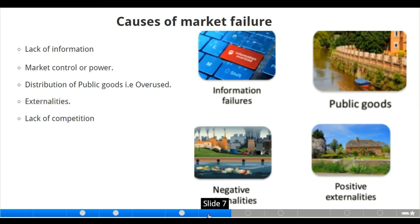Moving to the next slide, we have the causes of market failure. First, there is lack of information — if supply is limited relative to demand, information gaps arise. Second, there is market control or market power. Third, there is poor distribution of public goods; if there is overuse in the distribution of public goods, there will be market failure.